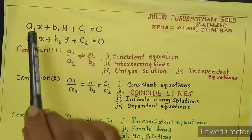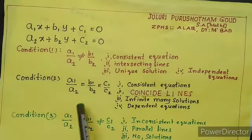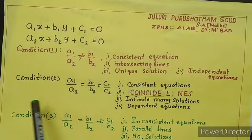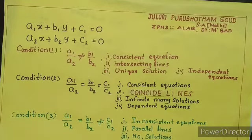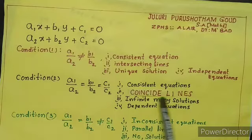Only condition 2: this a1 by a2 is equal to b1 by b2 is equal to c1 by c2. If these all are equal, they are called also consistent equations, same consistent equations only.